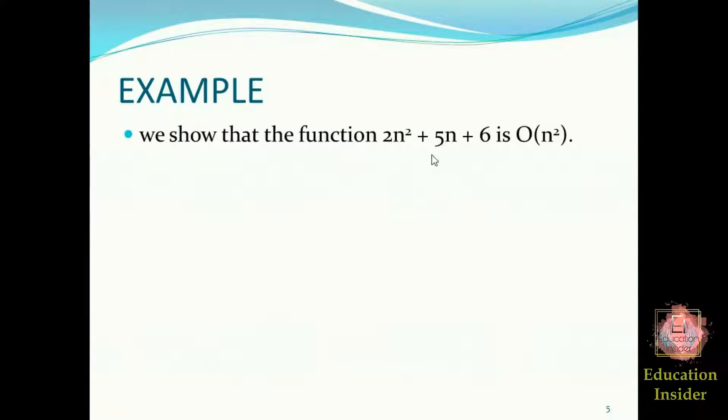This is an example of Big O asymptotic notation. We need to prove that the function 2n² + 5n + 6 is bounded by Big O of n². This is g(n), and this is f(n). This is the crux of whatever we have studied till now about proving Big O asymptotic notation. You need to remember this for Big O notation.